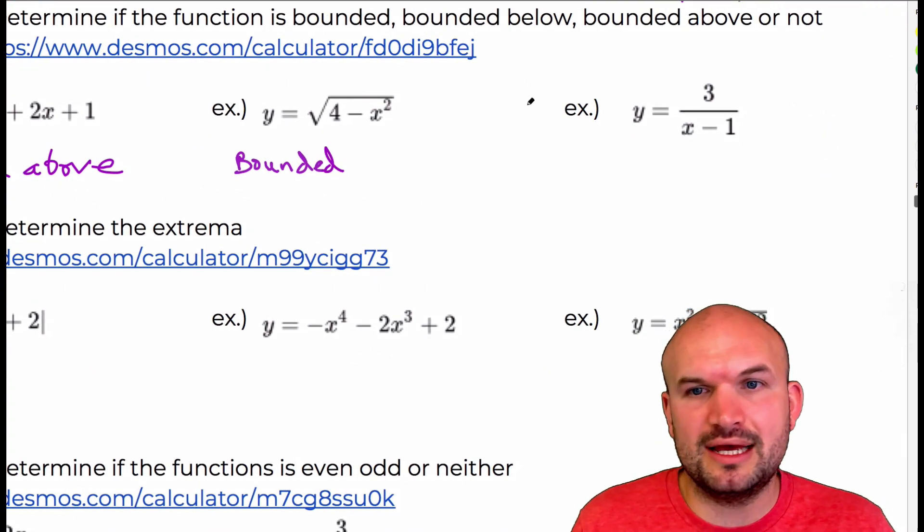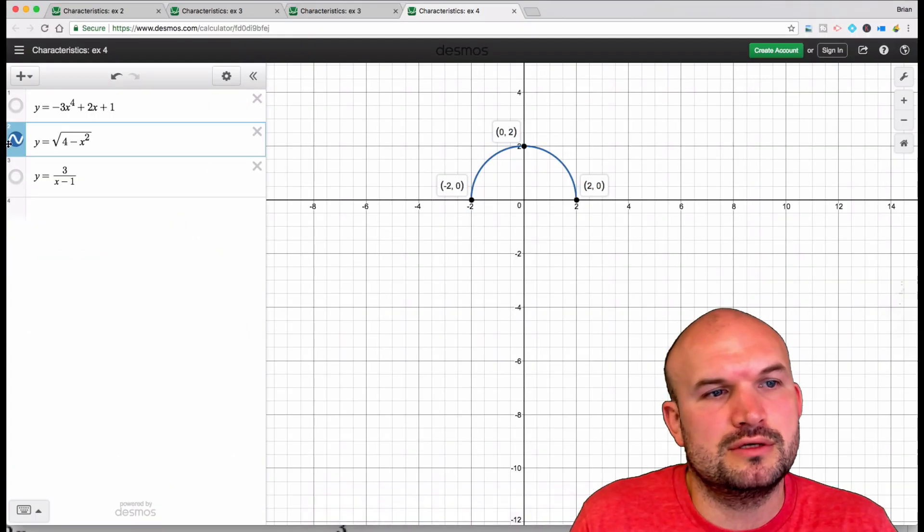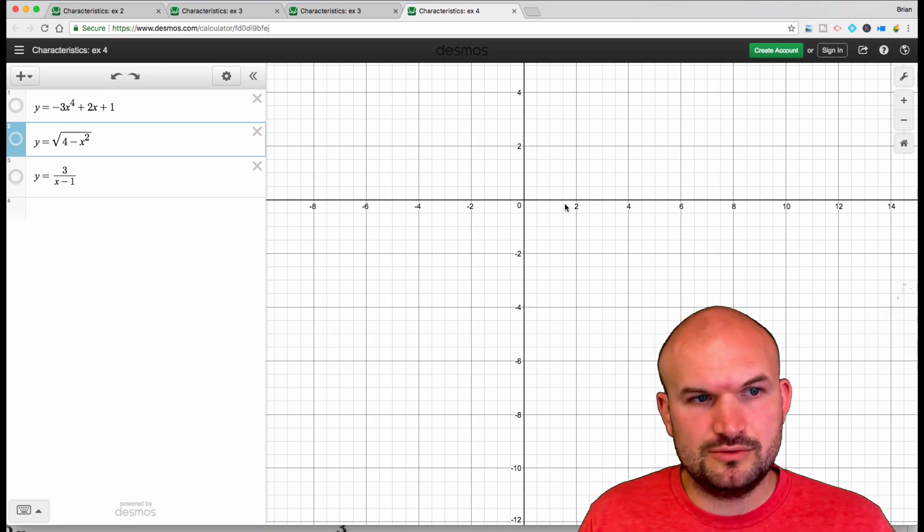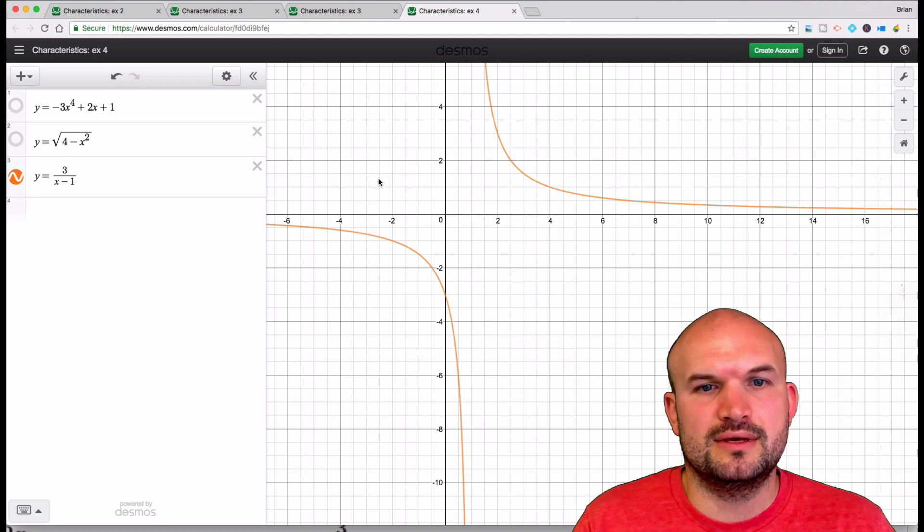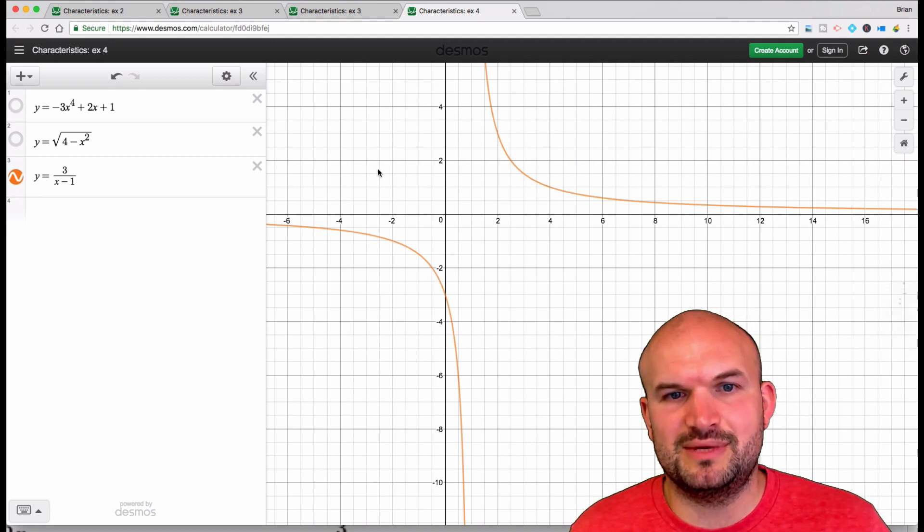All right, last example is y equals 3 over x minus 1. So let's put that out. And we can see here, it looks... Let's go and see here as I see if I can do my left hand.